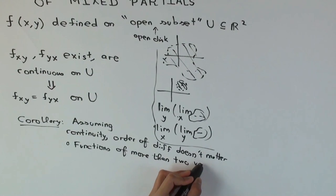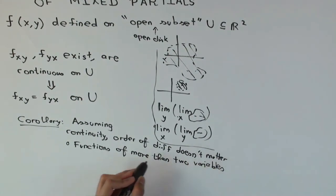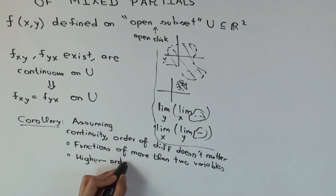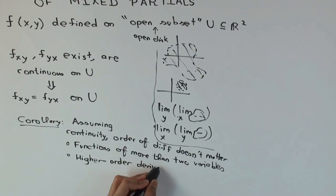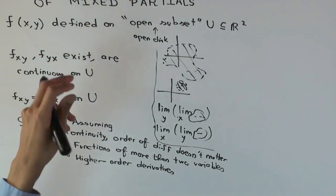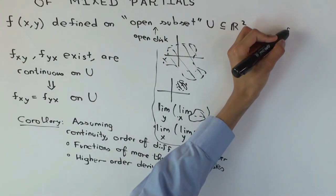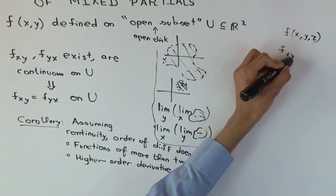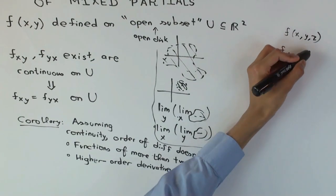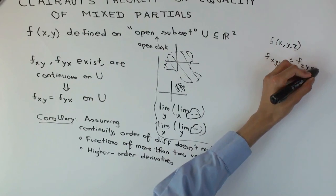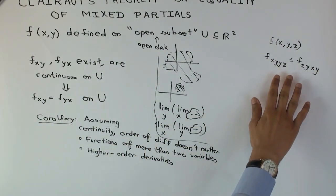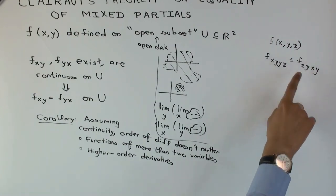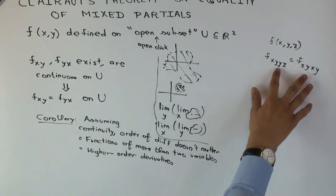The original statement is for two variables, but it also tells you things for higher order derivatives. Under suitable continuity assumptions, if you have a function of three variables, then f sub xyyz will be the same as f sub zyxy. I'm illustrating both ideas: taking a higher order derivative and using a function of three variables.